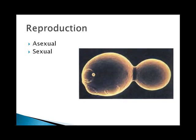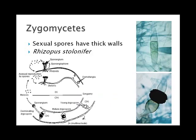Fungi can reproduce asexually or sexually, and all fungi groups are named by their sexual spores. Asexually, they can reproduce through fragmentation, budding, or asexual spores. Sexually, they always reproduce through spores. The zygomycetes are a group of fungi with very thick-walled sexual spores called zygospores, visible in the diagram. The most common example is Rhizopus stolonifer, or black bread mold.